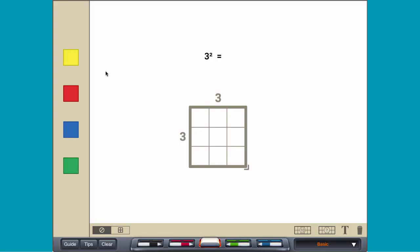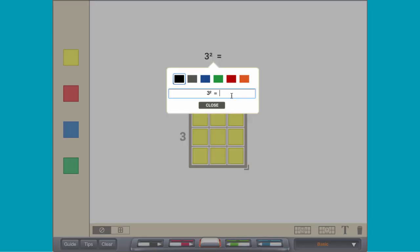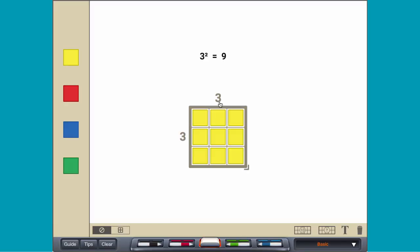A square number is the product of a number and itself. To find 3 squared, model the product 3 times 3 as an array 3 units high and 3 units wide. There are 9 units in total, so 3 squared equals 9.